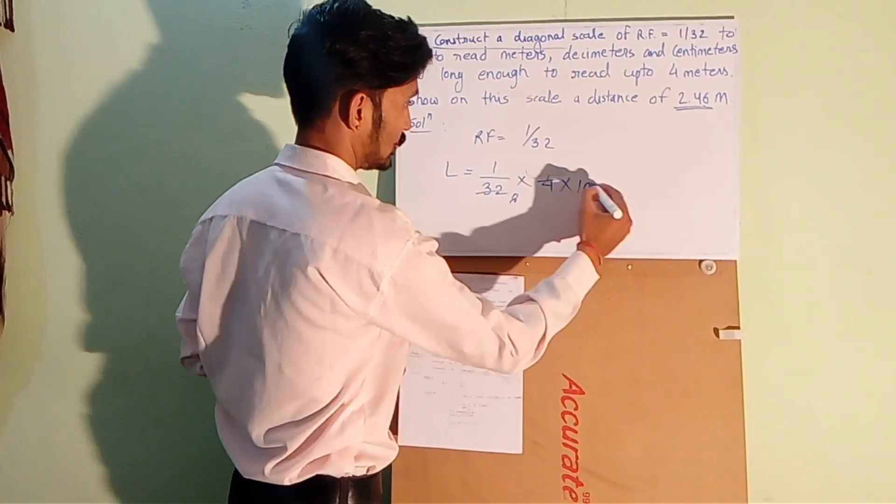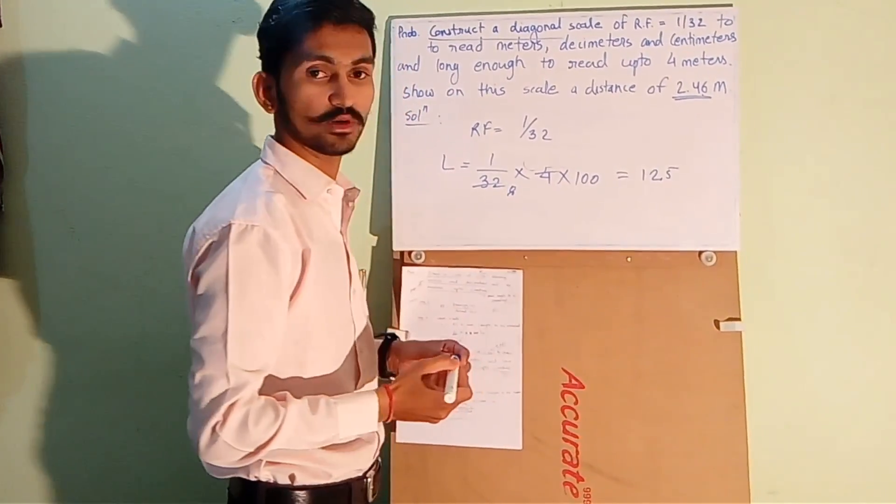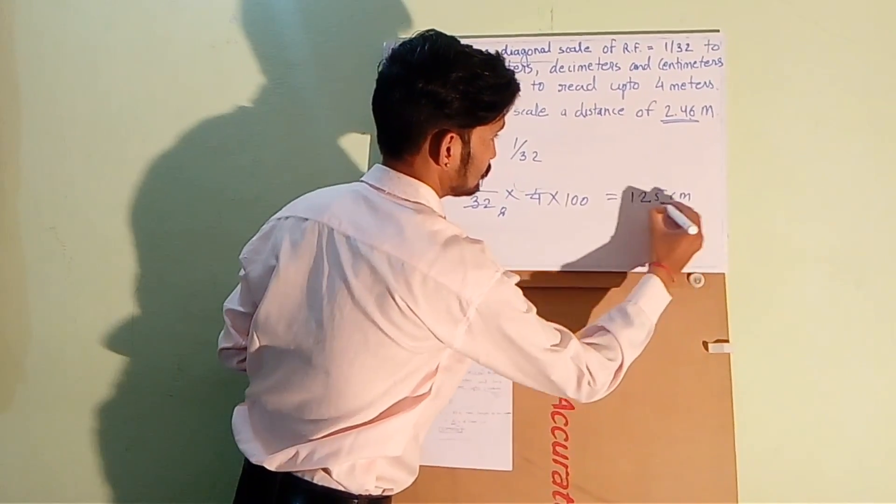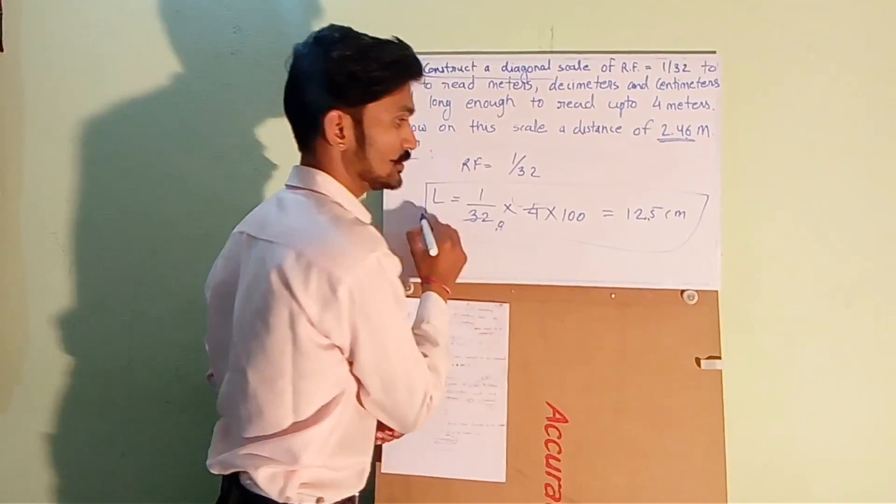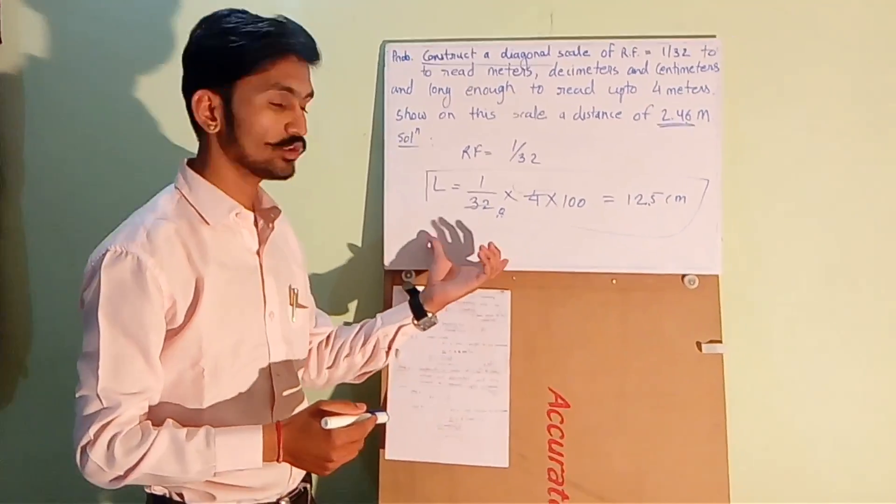4 divided by 32, multiplied by 100, equals 12.5 centimeters. So the length of the scale is 12.5 centimeters. So we have length of the scale.